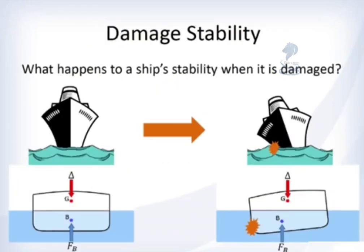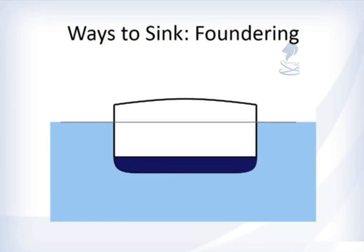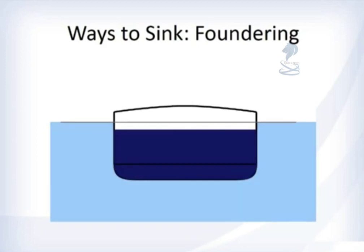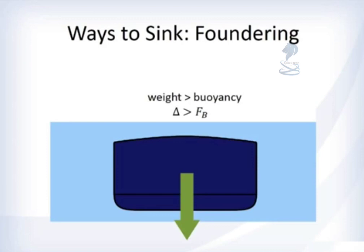When the ship is damaged, what happens to its stability? One way a ship can sink is foundering. Foundering is when you run over something, damage the bottom of the hull, and the ship starts to fill with water — it floods until weight is greater than buoyancy and the ship sinks. The ship sinks straight down, which is different from other modes of sinking where it's not heeled over at all.